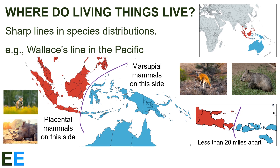The environments are extremely similar on each side of the line. In fact, some of the landmasses that differ in their fauna are less than 20 miles apart now — but for most of history, they were further apart because these islands are on different tectonic plates. Bali and Lombok are within sight of each other, but carry completely different mammalian species because of their histories.